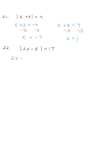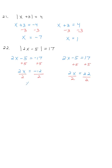The two equations for problem 22 are: 2x minus 5 equals negative 17, and 2x minus 5 equals positive 17. Adding 5 to both sides of both equations: 2x equals negative 12, and 2x equals 22. Dividing both sides by 2 in each equation, I get x equals negative 6 and x equals 11.